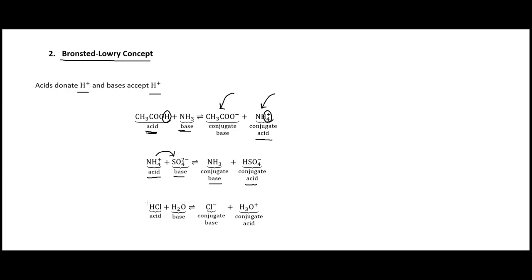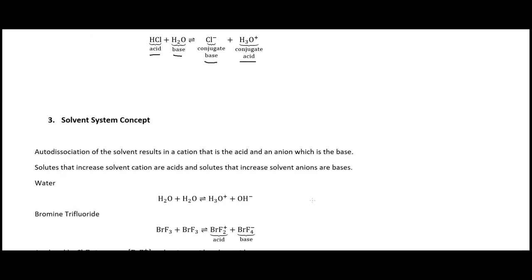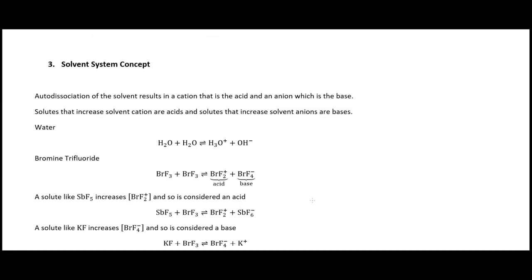We can also use the Arrhenius form within Bronsted-Lowry: HCl plus H2O gives the conjugate base Cl minus and the hydronium H3O plus. That covers Bronsted-Lowry acids.